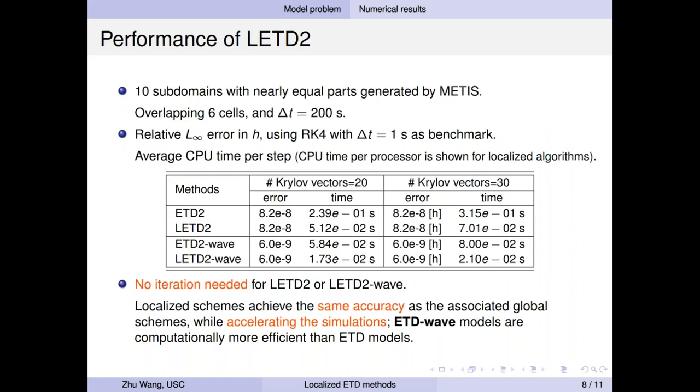So here is the performance of the algorithm. To test it, we use 10 subdomains generated by Metis, and the overlapping size to be six, and we fix the time step size to be 200 seconds. Then we measure the performance of the algorithm using error and CPU time. For the error, we consider relative error in depth. And we use RK4 with a very small time step as a benchmark solution. And for time, we just measure the average CPU time per step.